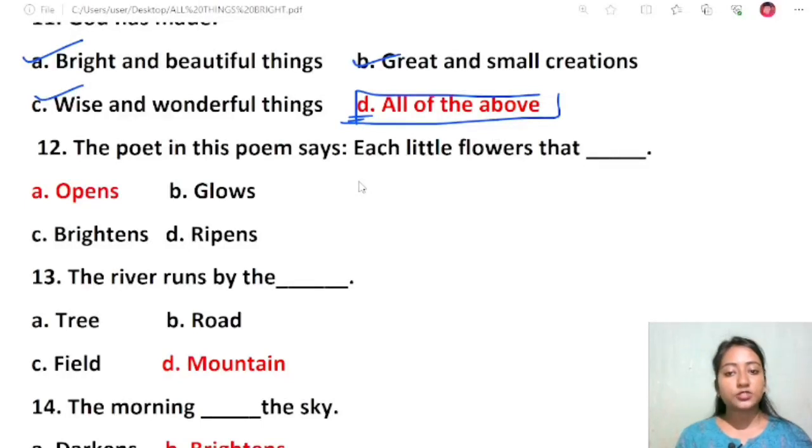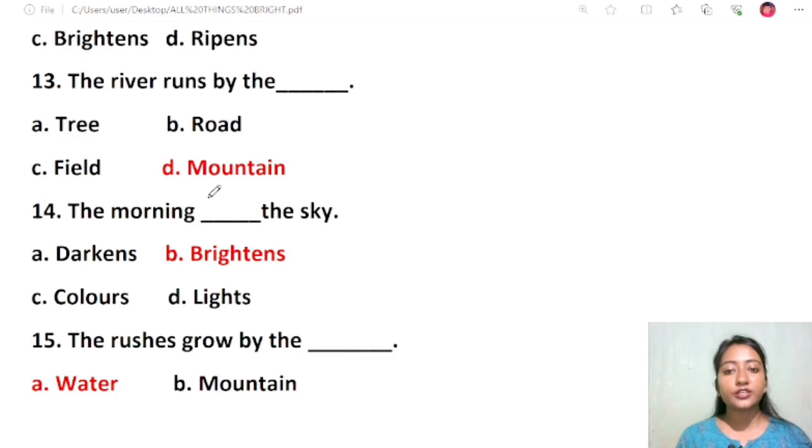The poet in this poem says, each little flower that opens. Options are opens, glows, brightens, ripens. Each little flower that opens, each little bird that sings. So the answer is opens. Question 12: The river runs by the mountain. Options are tree, road, field, mountain. The correct answer will be mountain.